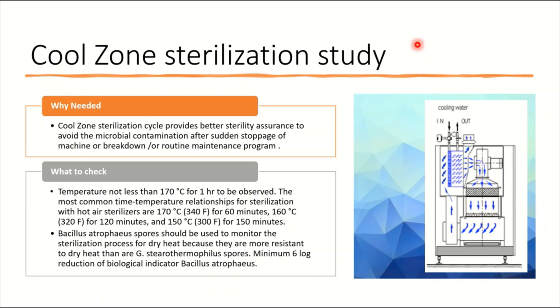This study came out in the last few years, called cool zone sterilization. Here, a couple of temperature combinations: 170 degrees Celsius for one hour to be observed. There are lots of combinations like 160 degrees for 120 minutes, 150 degrees for 150 minutes. Lots of combinations people are trying based on process design and development. The intent is that we need to demonstrate six log reduction by using biological indicator like Bacillus atrophaeus. Bacillus stearothermophilus is not the BI of choice for dry heat. You need to demonstrate six log reduction. That is the expectation of the cool zone. I have an article on cool zone and I will give that link to YouTube description so people can go in detail.